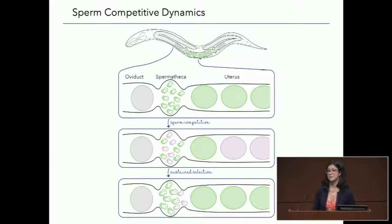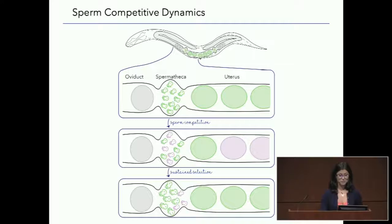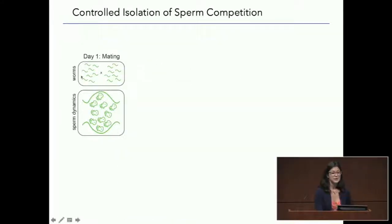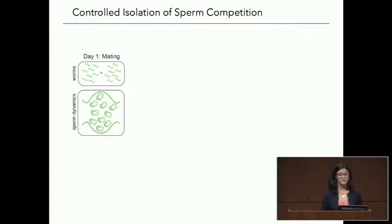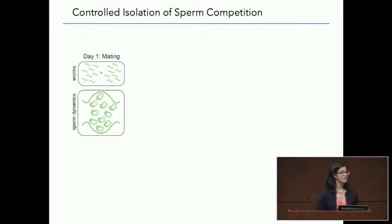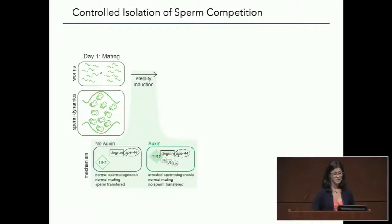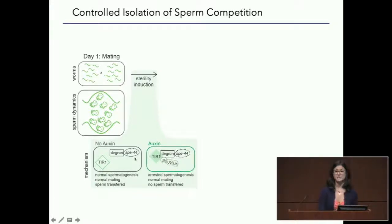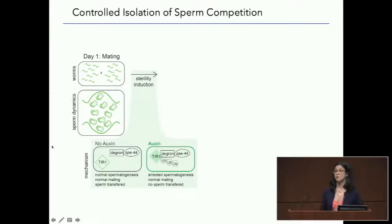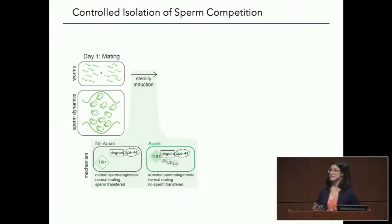This is the basic idea behind the experimental evolution we're doing — selecting for males to have an increased sperm competitive ability over time. On day one, females and males mate with each other, so all sperm in the spermatheca is coming from the same genotype. Now we want to isolate this sperm so we can add in our competitive pressure. To do this, we're using an inducible sterility system — specifically, the auxin-inducible degradation system — with a degron tag on the critical spermatogenesis gene SPE-44, driving expression of the F-box protein TIR1. When there's no auxin hormone present, TIR1 is inactive, so SPE-44 has normal activity, meaning normal spermatogenesis, normal mating, and sperm transfer.